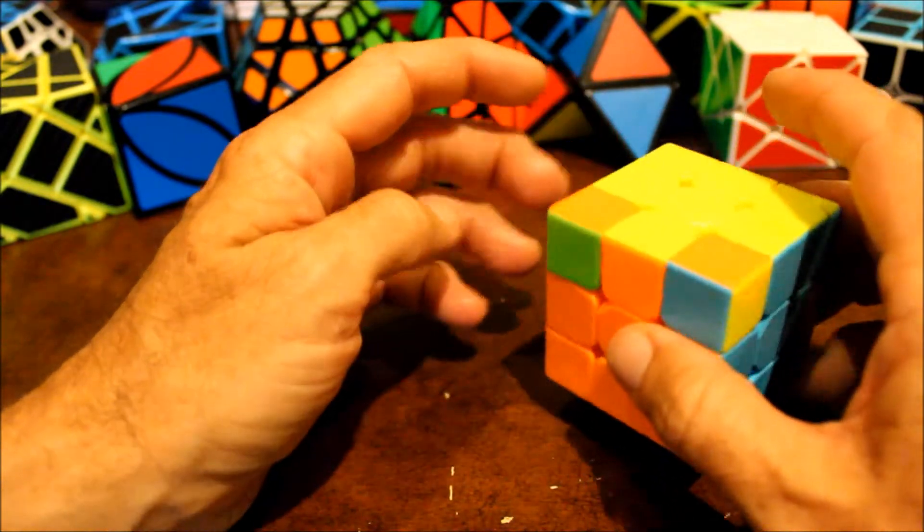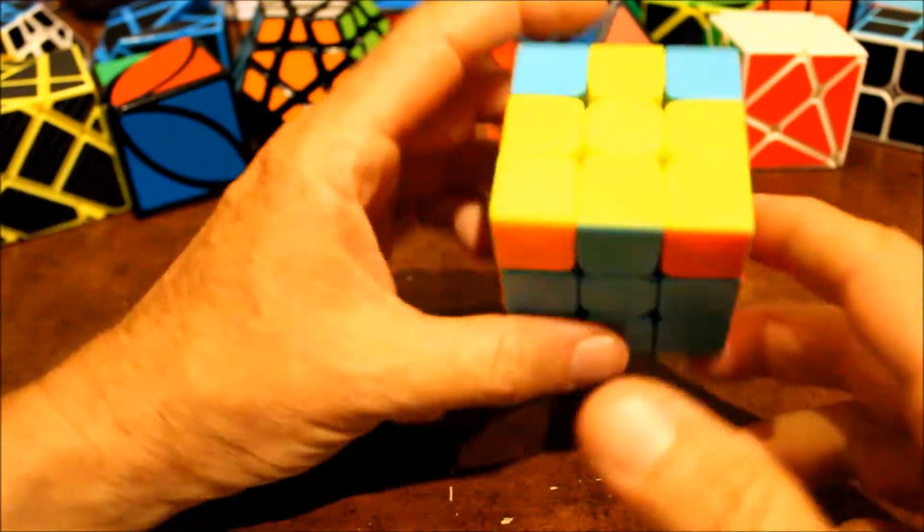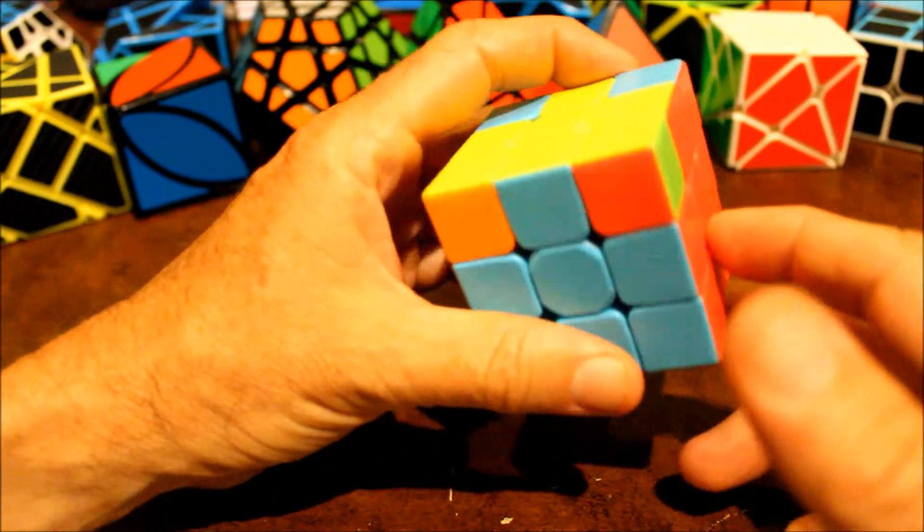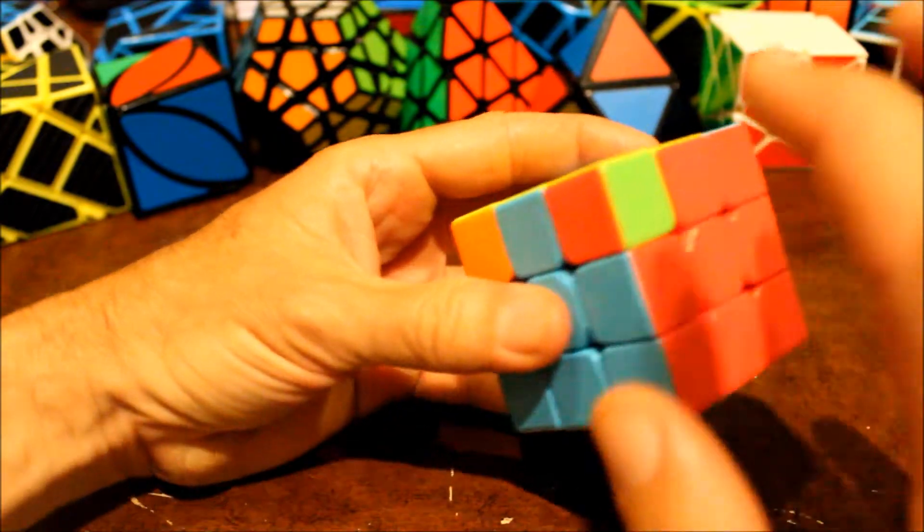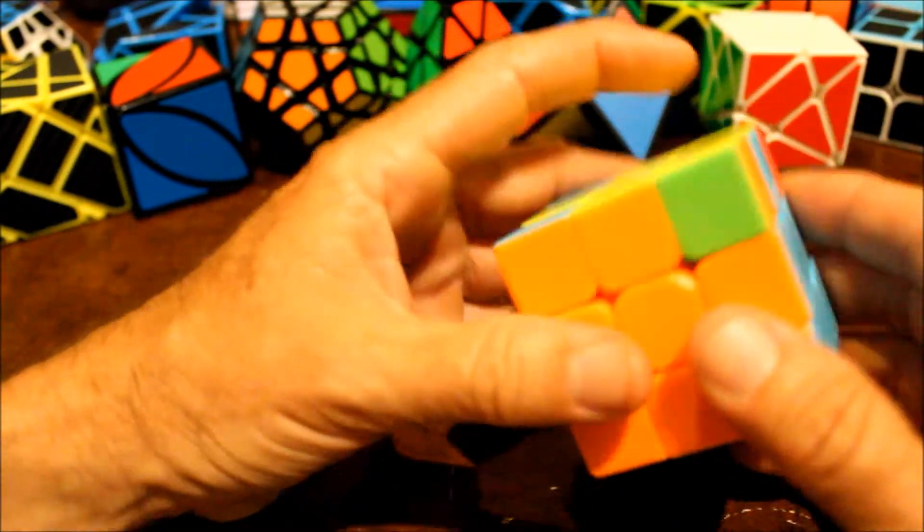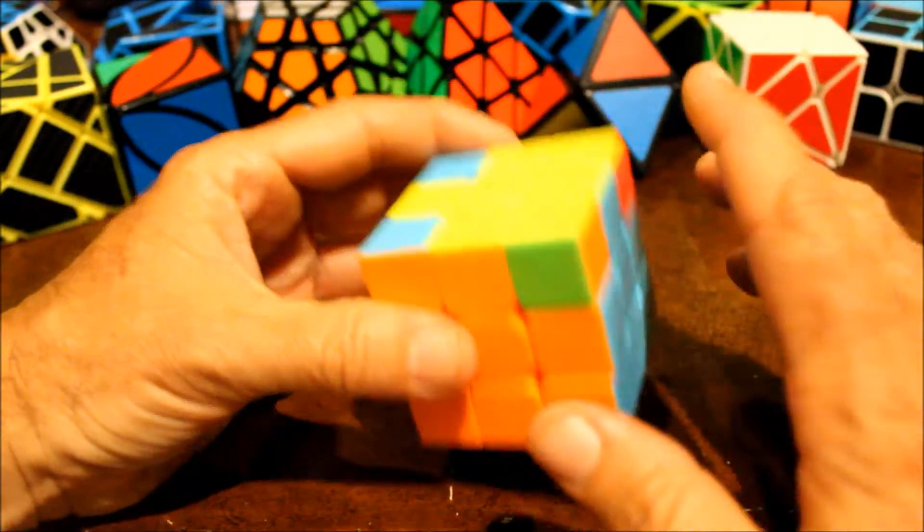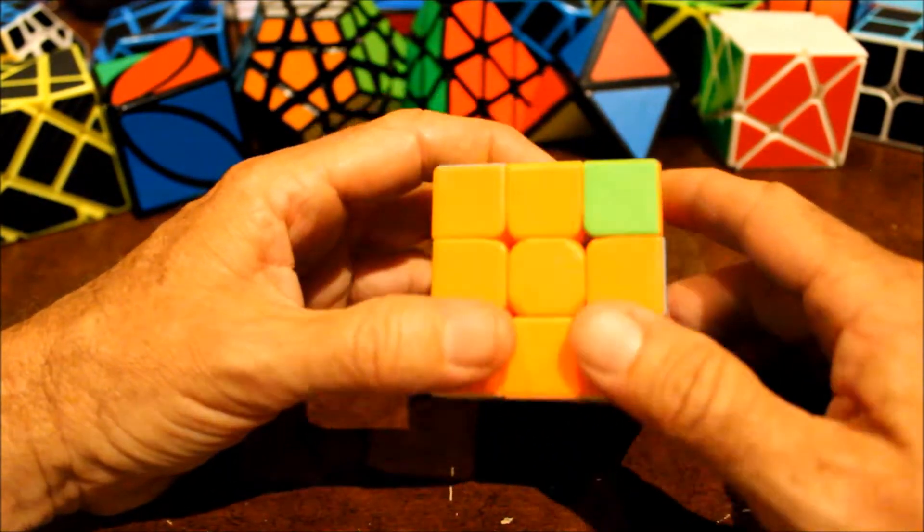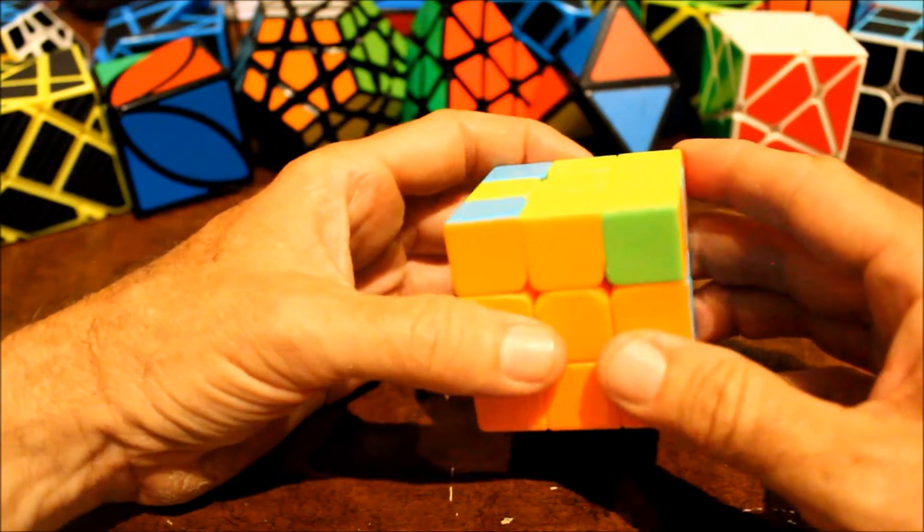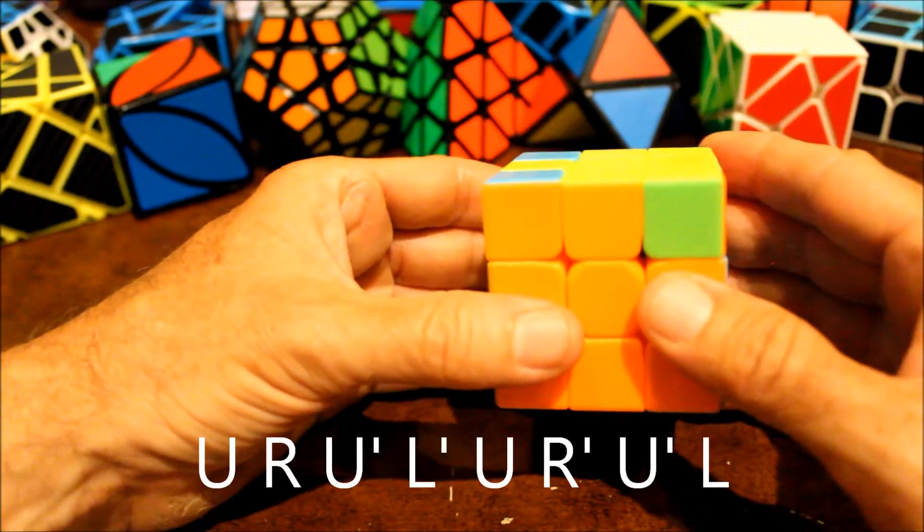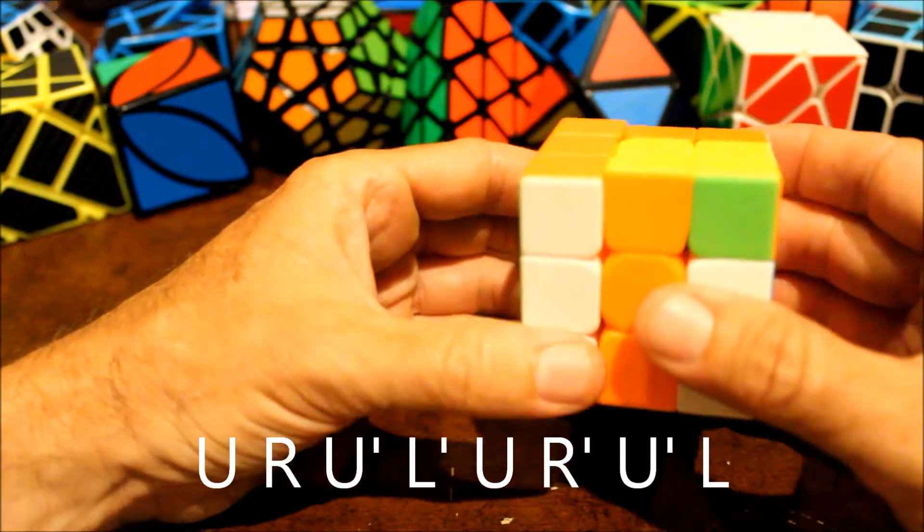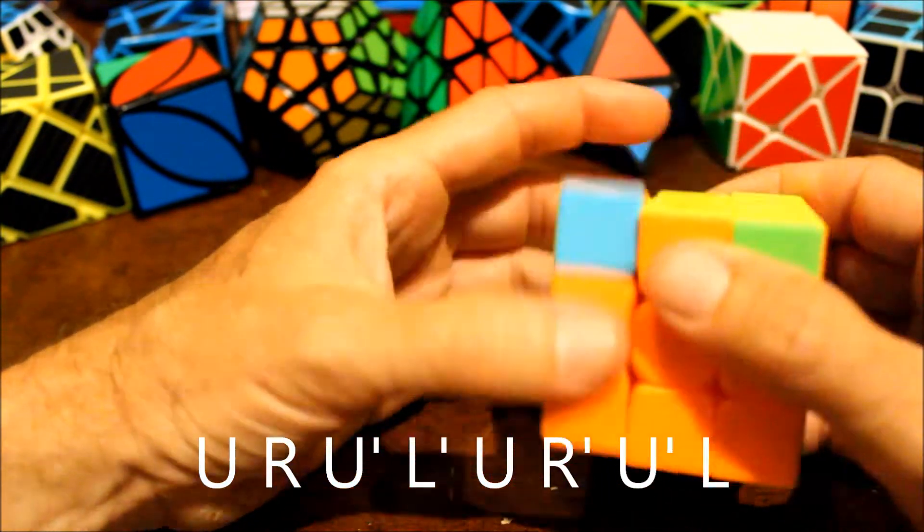Let's look at another situation. Here is another situation you may encounter in trying to position the top corners. That one's wrong, that one's wrong, that one's wrong, and that one's wrong. If all four of them are wrong don't worry about it. Just put the top in any position and then do that same algorithm I just said. Upper, right, upper prime, left prime, up, right prime, upper prime, left.